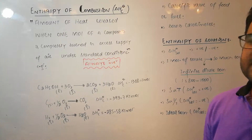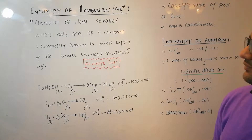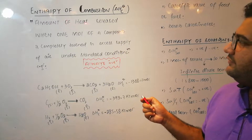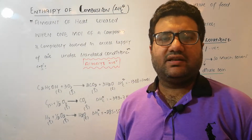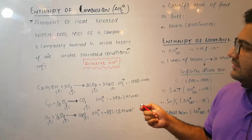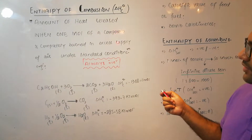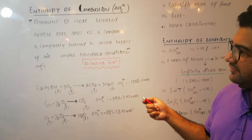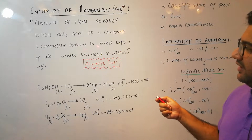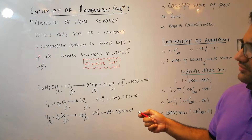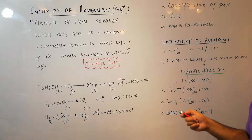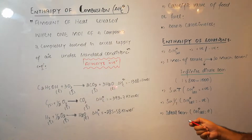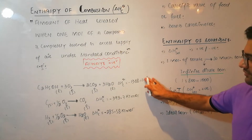Next is the standard enthalpy of combustion — that is the amount of heat released. We will not write absorbed because combustion is always an exothermic process. The condition is that one mole of a compound must be completely burned in excess supply of air or oxygen under standard conditions. As combustion is always exothermic, it is always negative. For example, the enthalpy of combustion of ethanol is minus 1368 kJ per mole.